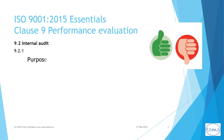9.2 internal audit. This subclause on the internal audit has two parts. 9.2.1 provides the purpose of the internal audit, which is firstly to ensure that the QMS conforms to the organization's own requirements and all the requirements of ISO 9001, and then secondly to see whether the organization is effectively executing the QMS processes and requirements.